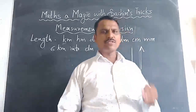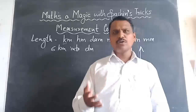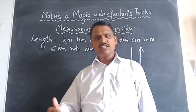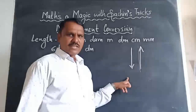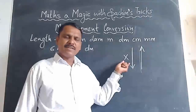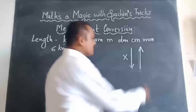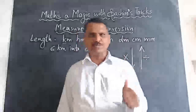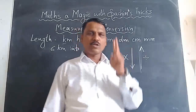Think of it this way — does a person's age grow from lower to higher or higher to lower? Growth is always from lower to higher, and higher to lower is written in a cross symbol. Cross in mathematics means multiplication. So keep in mind: whenever we are converting higher to lower unit, we multiply; and when going lower to higher, we divide.